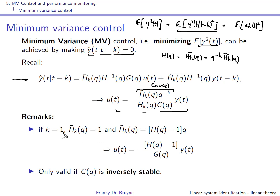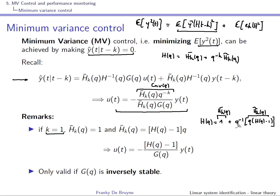If K is equal to one, then H of Q equals 1 plus Q minus 1 times Q times H of Q minus 1. So H bar will be one and H tilde will be what remains. If you plug that in, the terms cancel out and you obtain a nice and easy expression for the minimum variance controller when K equals one.